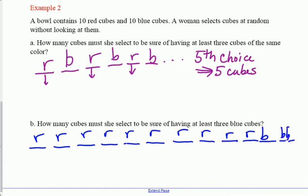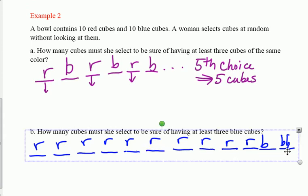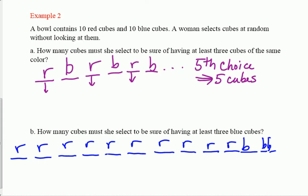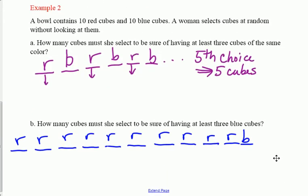Now, how many cubes must she select to be sure of having at least three blue cubes? Again, we'll use the worst-case scenario method. She wants to get at least three blue cubes. Worst-case scenario, she has terrible luck, so she could pick all ten red cubes first, and then finally pick three blue cubes. That means to be sure of having at least three blue cubes, she has to pick at random 13 cubes.